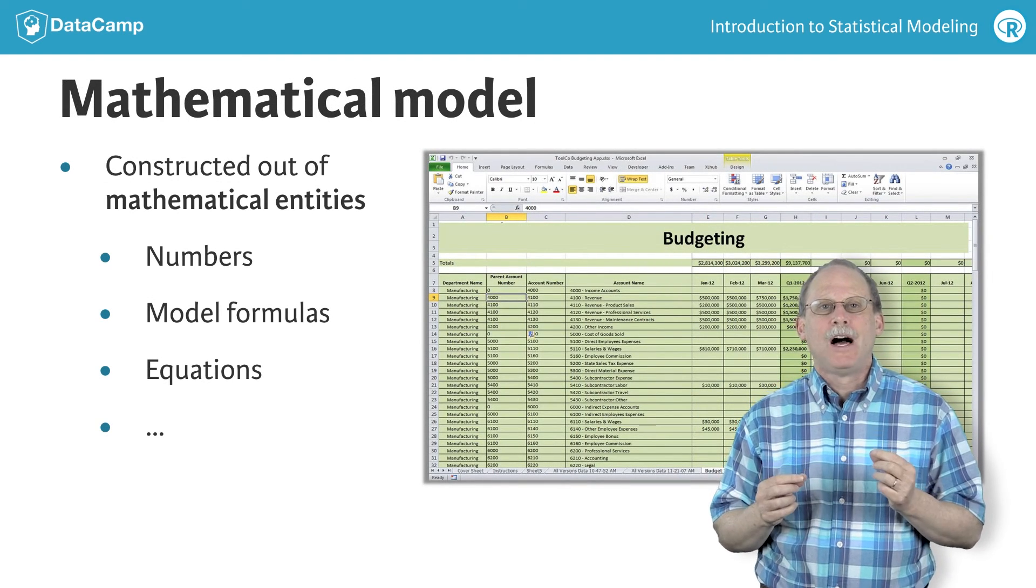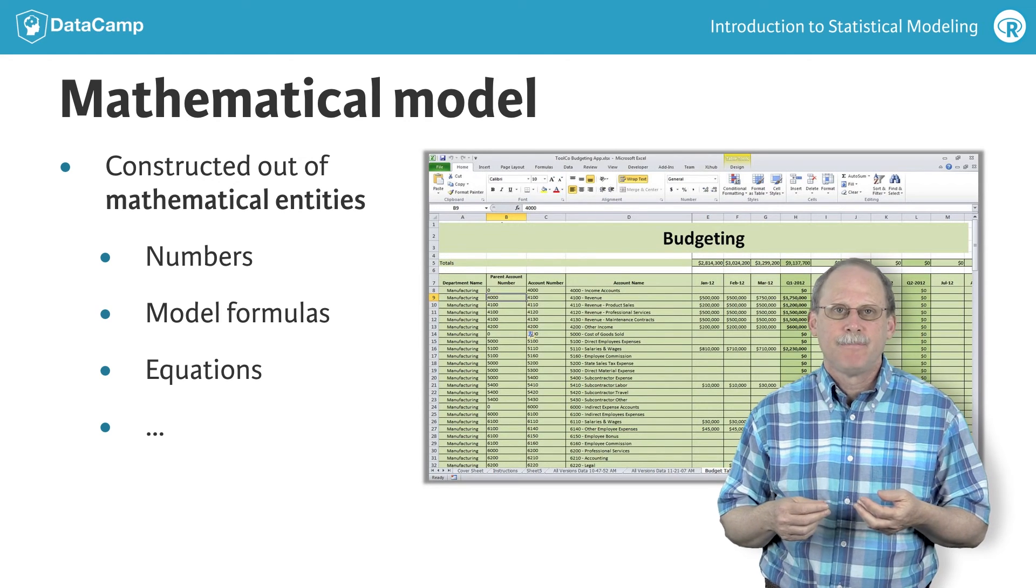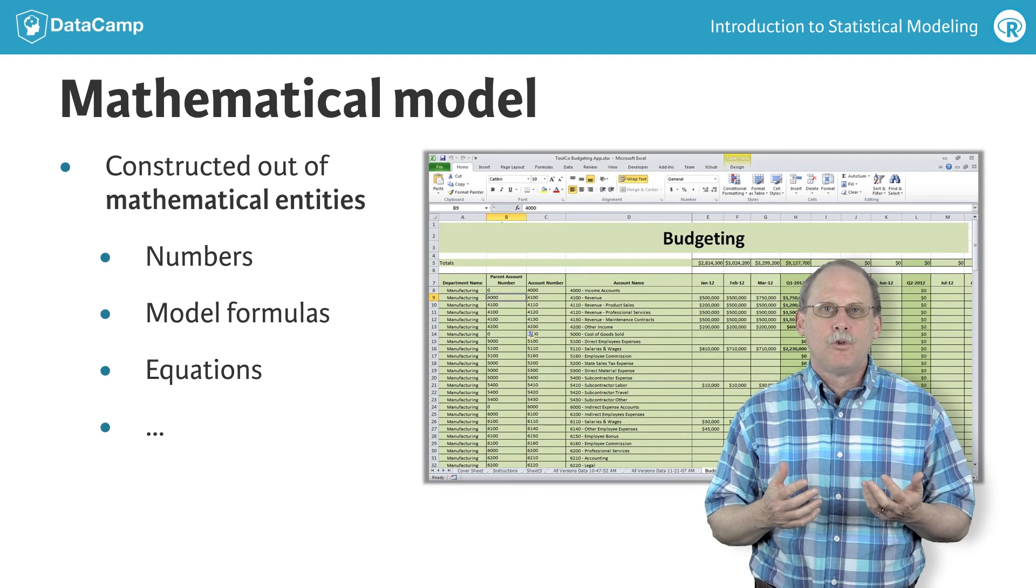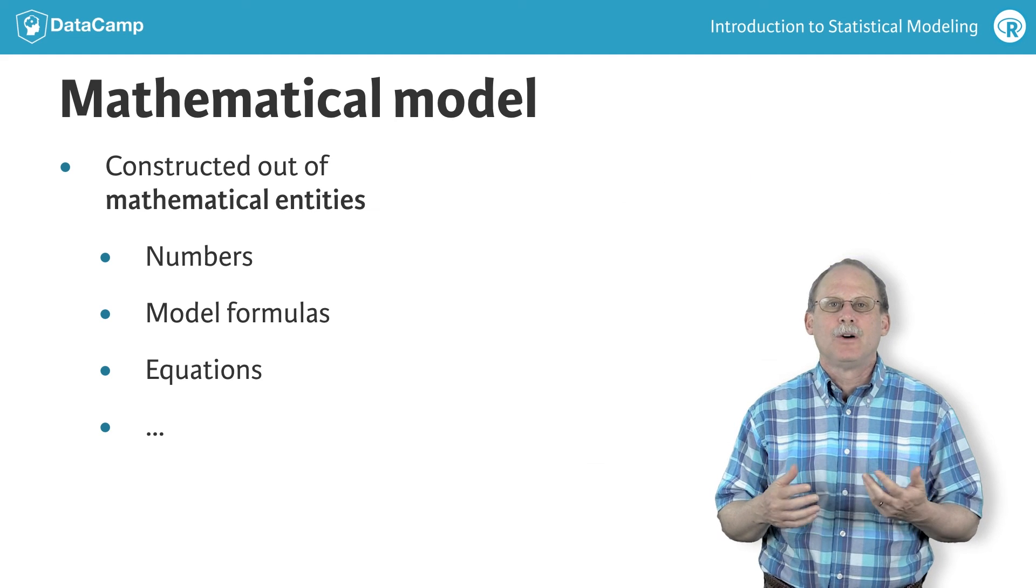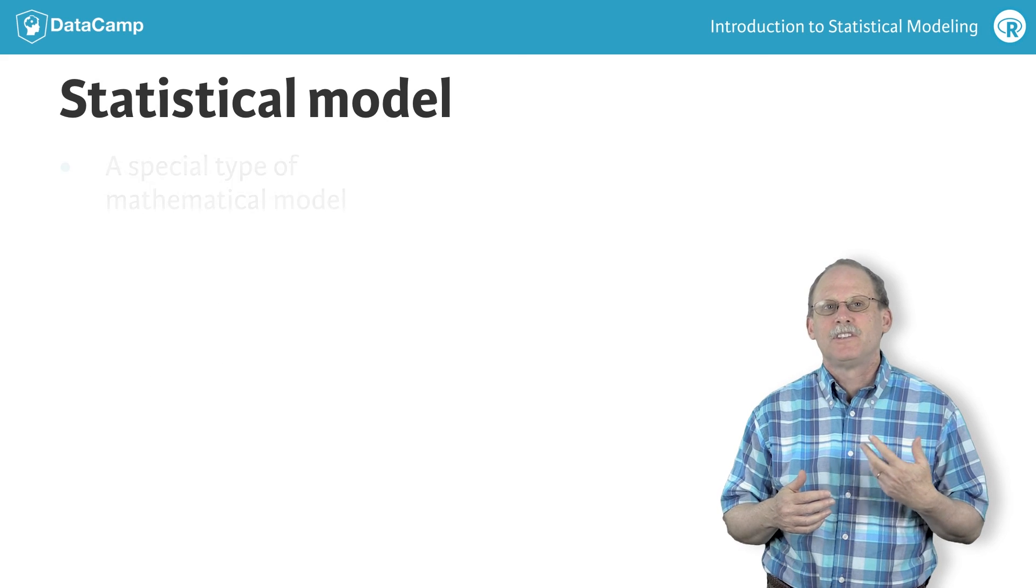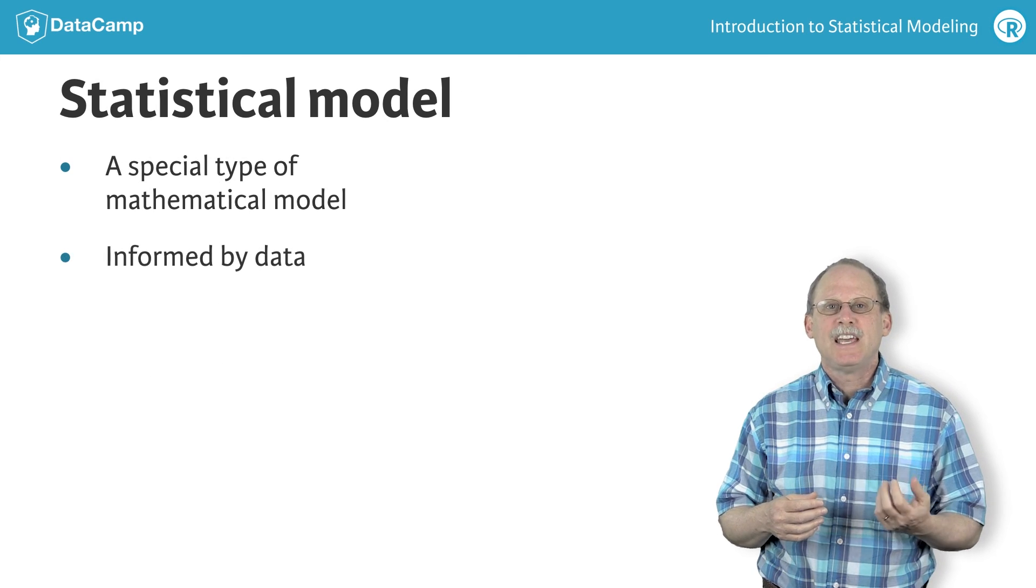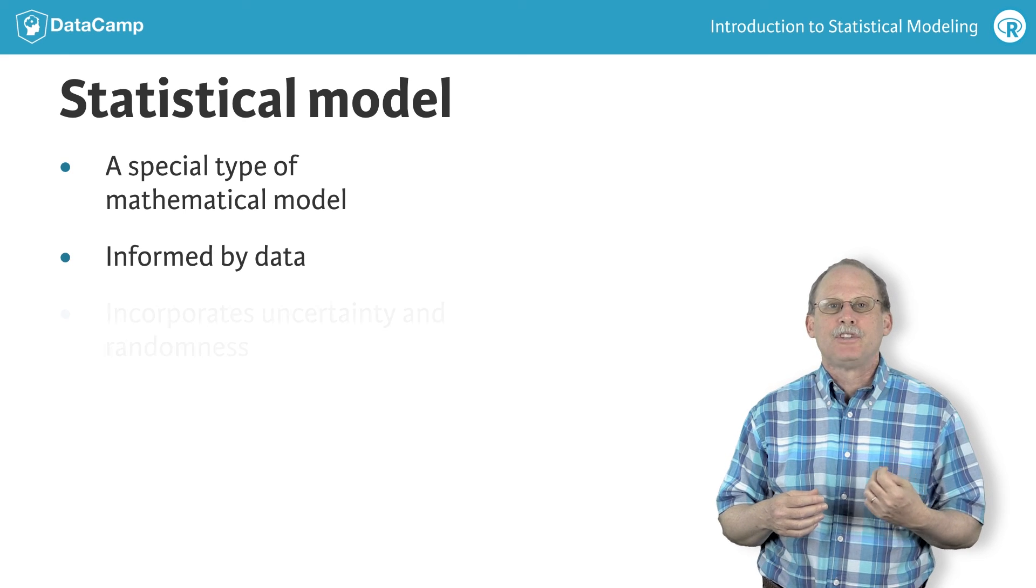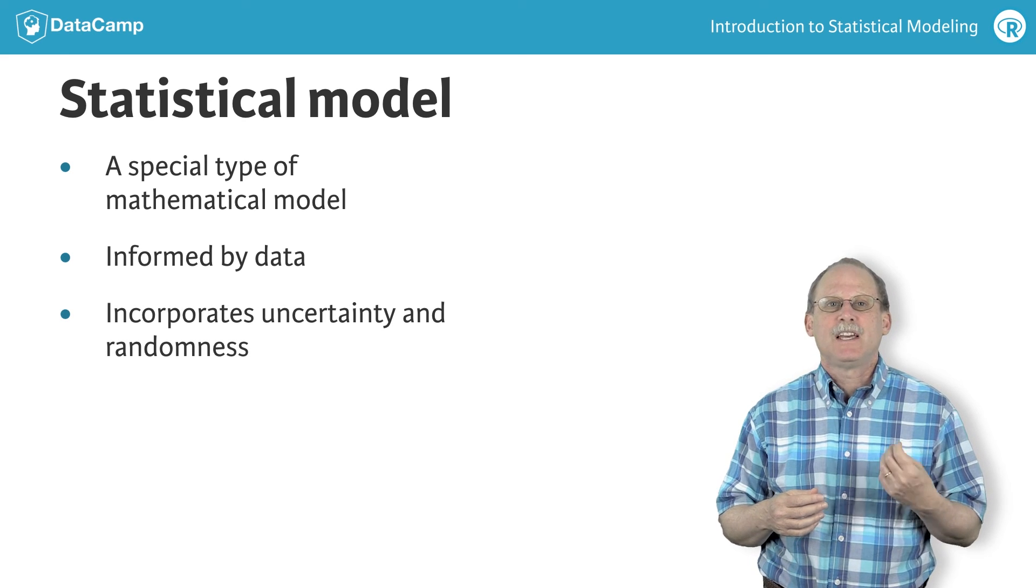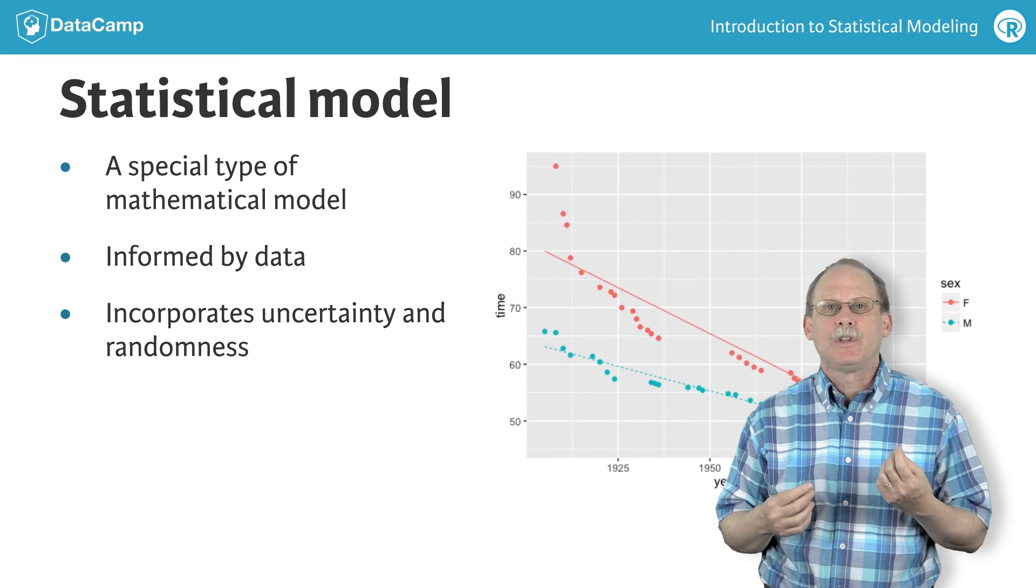A mathematical model is simply a model built from mathematical stuff: numbers, formulas, equations, and so on. A statistical model is a special kind of mathematical model. It is informed by data and is often built to predict future events or to test out hypotheses about how the system being modeled actually works.